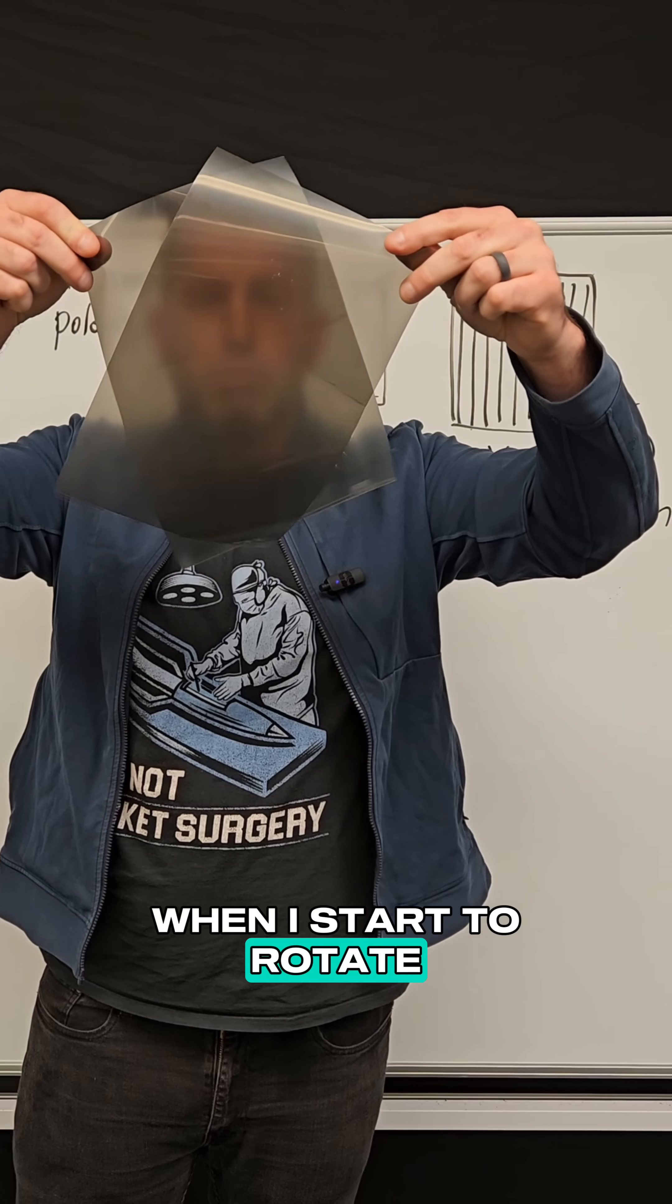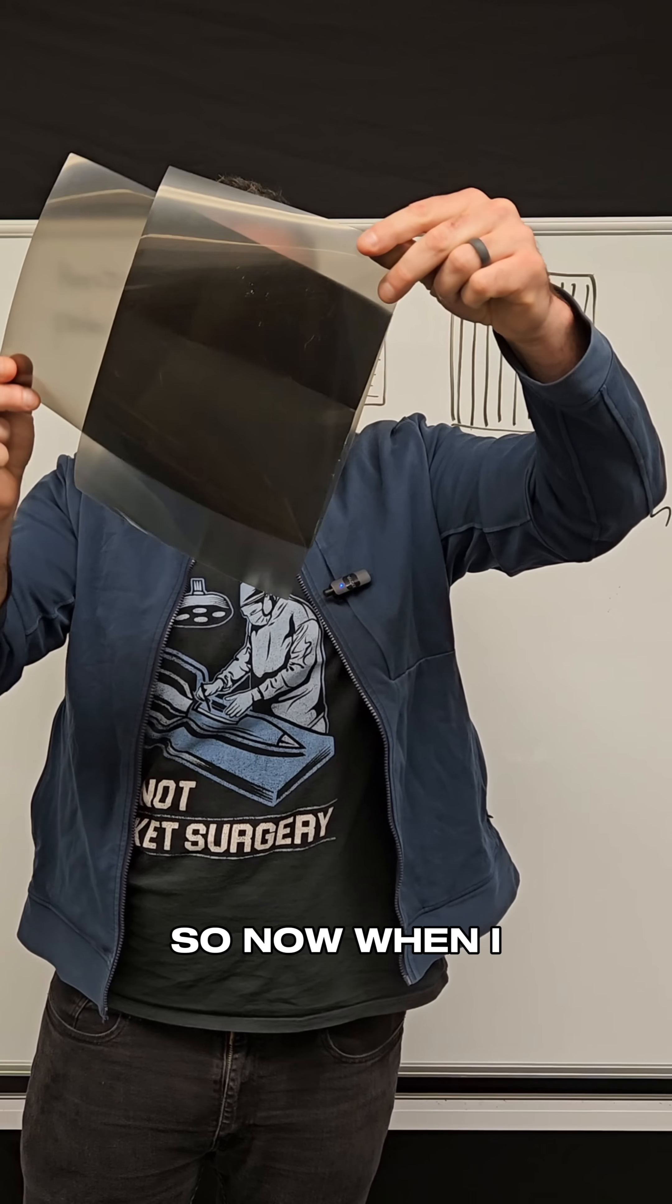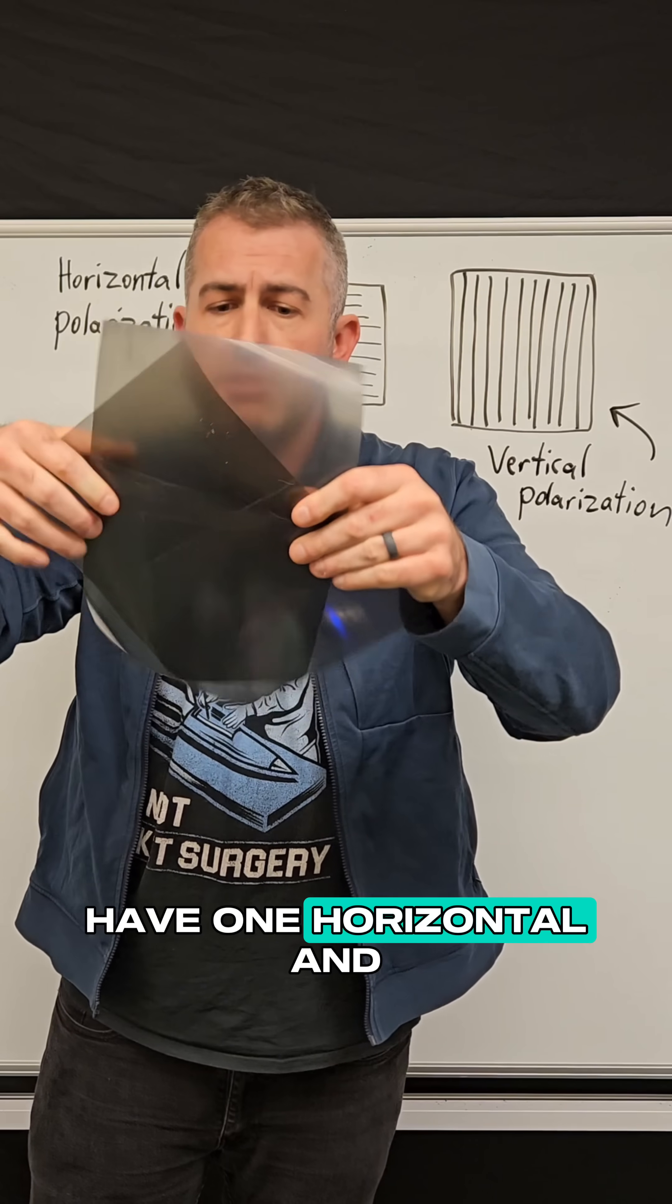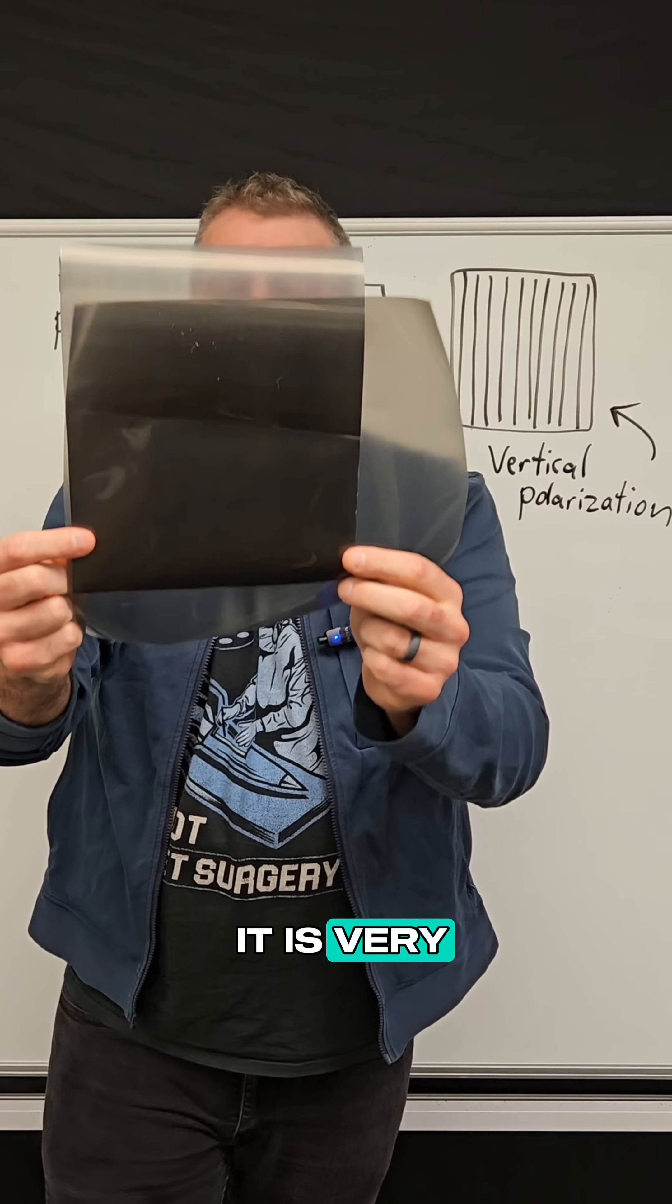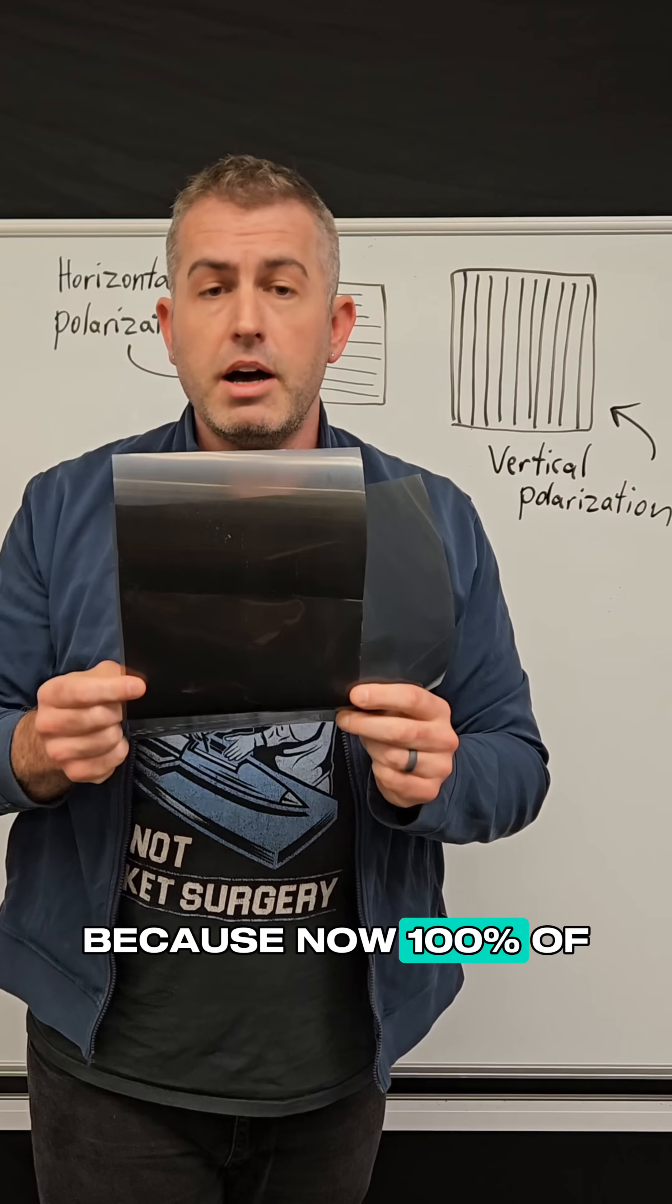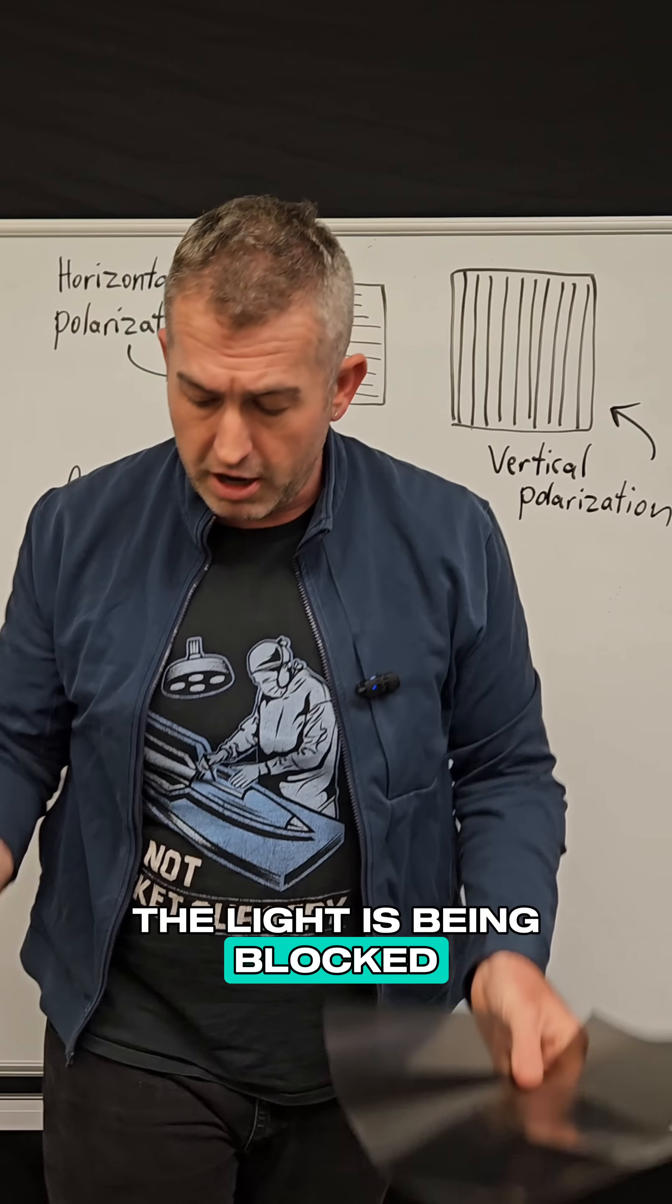But watch what happens when I start to rotate. So now when I have one horizontal and one vertical, you're going to notice that it is very, very dark because now 100% of the light is being blocked.